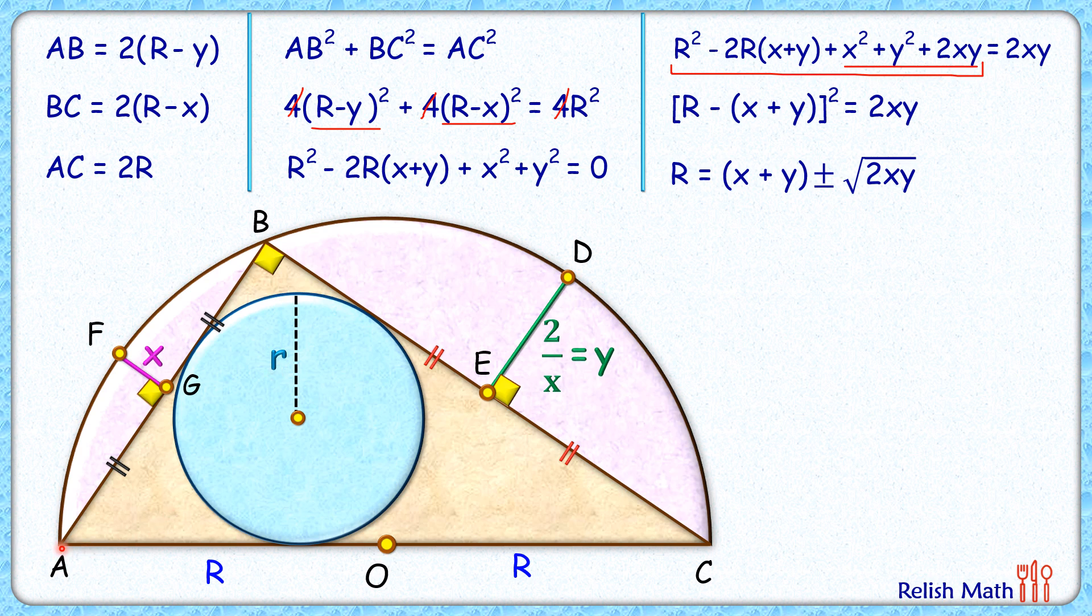So we know that in a right angle triangle the inradius is given by (AB + BC - AC)/2, which we can easily derive by comparing the length of tangents from external point.